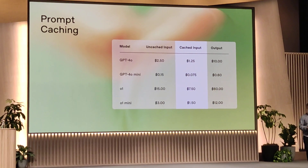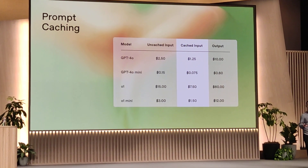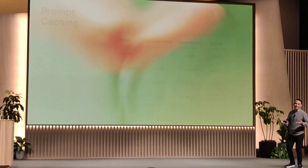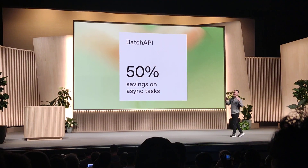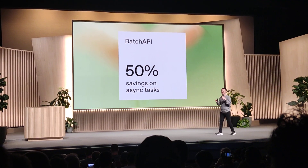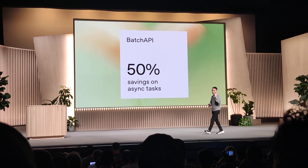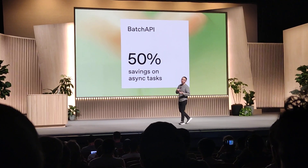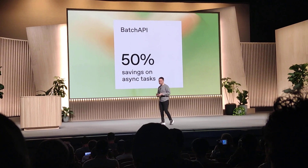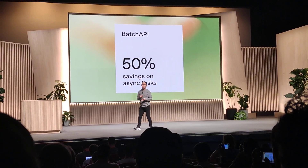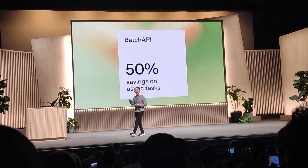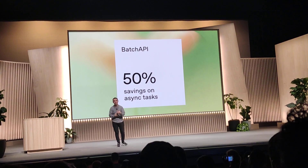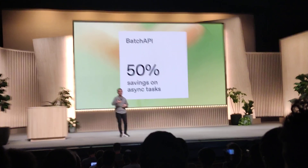The last thing I wanted to cover in terms of saving costs is our batch API. I think our batch API is a bit of a sleeper hit — it is 50% off both prompt and output tokens by running requests asynchronously. So instead of hitting the model and having it reply as quickly as possible, you create a batch file, which is a sequence of...